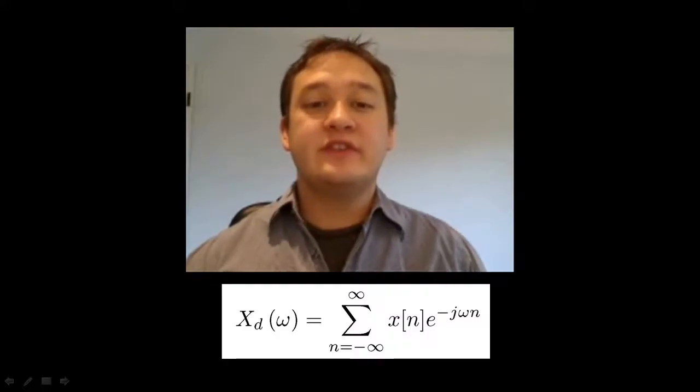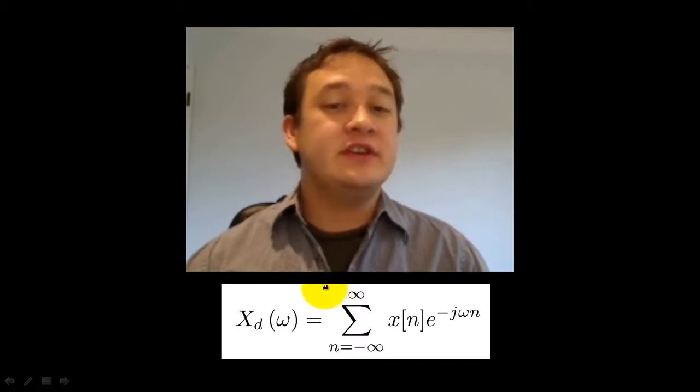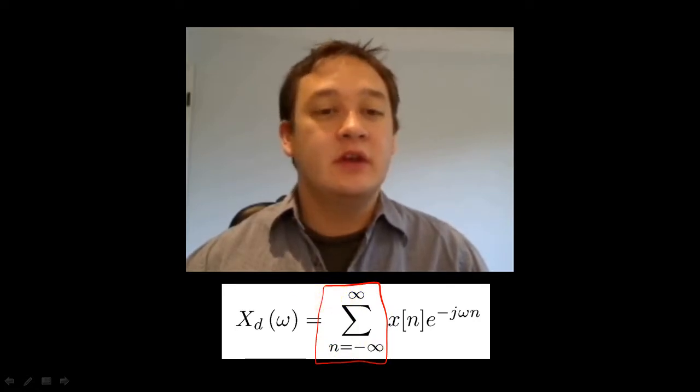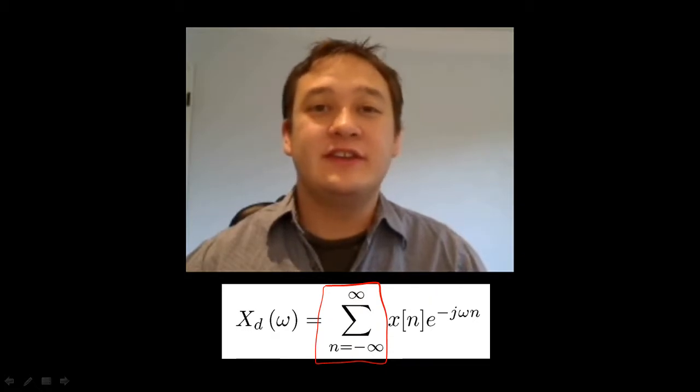During our previous lecture on the DTFT, you may have noticed something that made you uncomfortable. The summation to create the DTFT goes from negative infinity to positive infinity. Since the goal of DSP is to compute signals digitally, we would need to sample x of n for all eternity before we could calculate the DTFT.